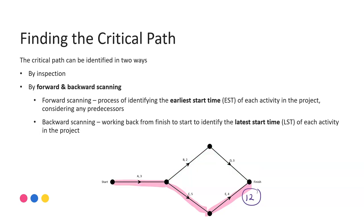For this particularly simple network, we can see it'll take 12 units to get from start to finish and the critical activities are A, C, and E. That means that B and D have some float time associated with them. It's rare though that we actually work by inspection, and so we have a process called forward and backward scanning to help us with more complex project networks and identifying those paths.